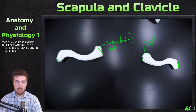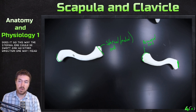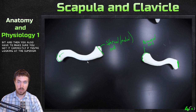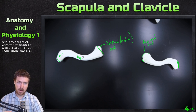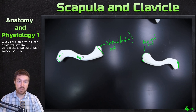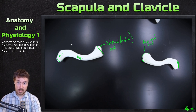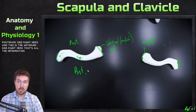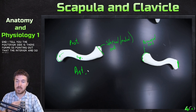The harder part of the clavicle is figuring out left and right. If this is the sternal end and this is the acromial end, does it go this way or that way? One way to remember is the S-curve it makes — it points out a little bit. You also have to make sure you get the superior versus inferior side correct. The superior aspect of the clavicle is smooth. If I tell you this is the posterior side and this is the anterior side, that's all the information you need. With the sternal end here and the posterior side identified forming a little S, this is the right clavicle.